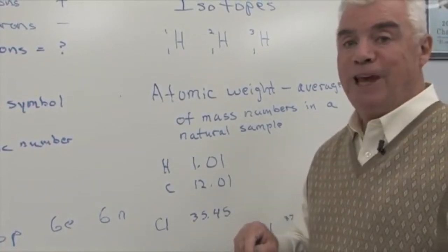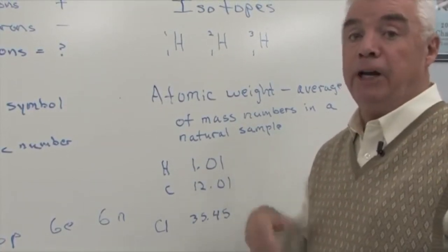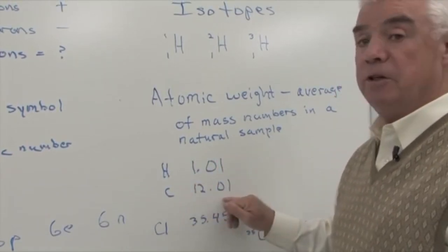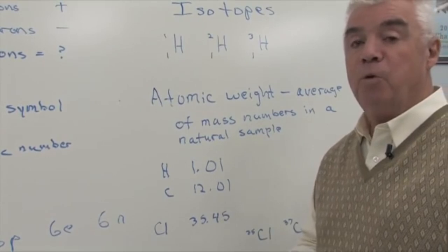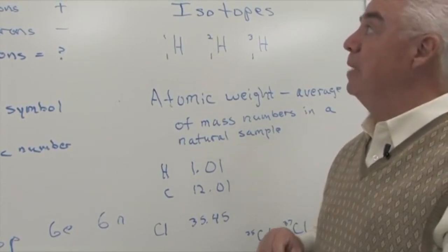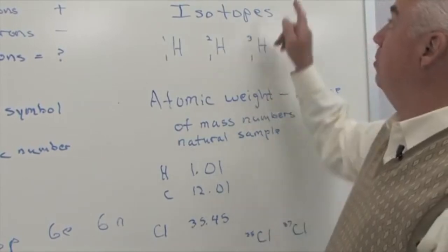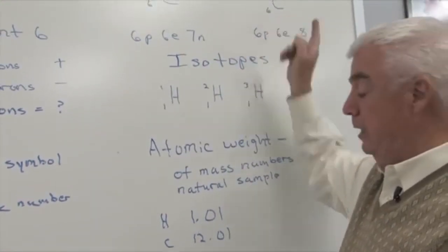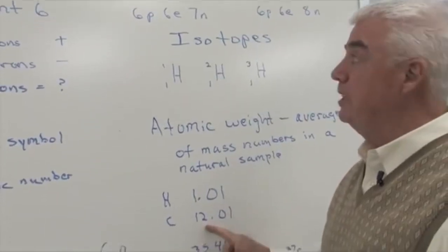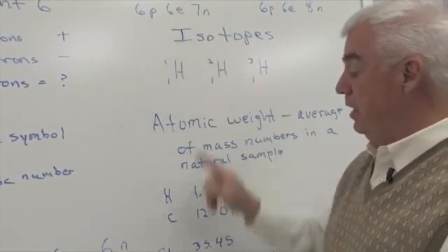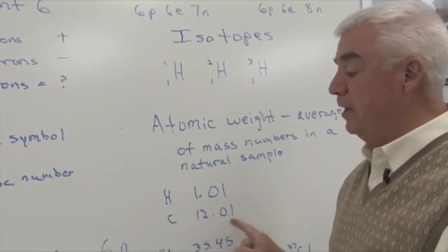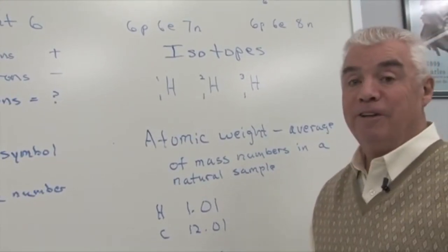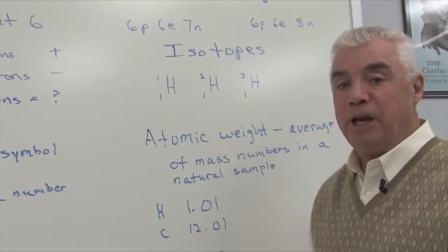And the same thing is true of carbon. When they measure the average mass number in a naturally occurring sample of carbon, they come up with this atomic weight, 12.01 atomic mass units. So, if carbon were all C14, well, this number would have been 14. Or 13, it would have been 13. The fact that it's 12.01 means that carbon-12 is the abundant isotope in nature.